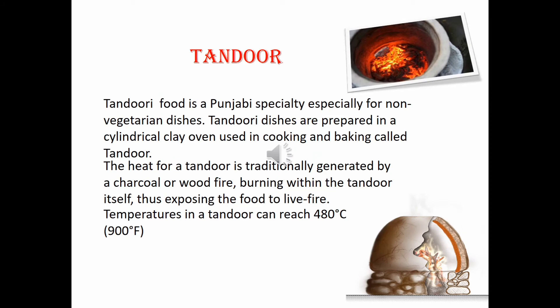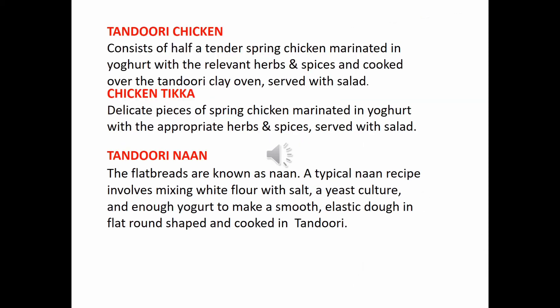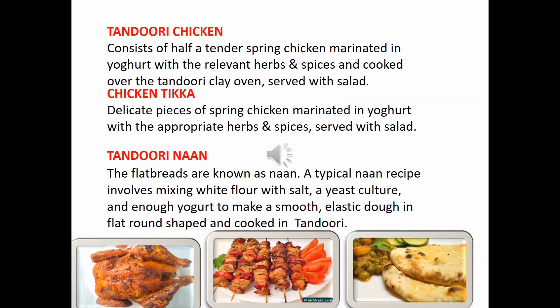Now coming to the tandoor. The Punjabi tandoor from South Asia is traditionally made of clay and is a bell-shaped oven which can be set into the earth and fired with wood or charcoal. It reaches temperatures of around 480 degrees Celsius. Tandoori cooking is a traditional aspect of Punjabi cuisine. In Punjab, especially in the villages, you can find communal tandoors where people use a single tandoor for making different breads. Communal tandoors still exist in remote areas of Punjab.